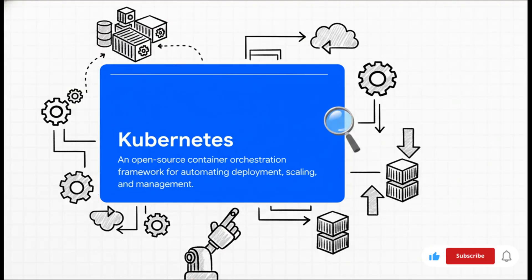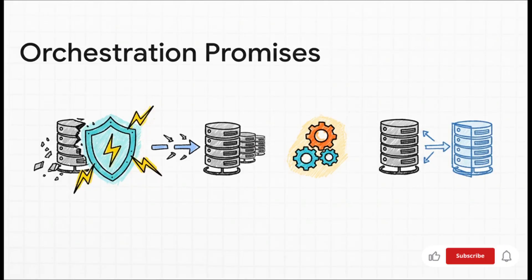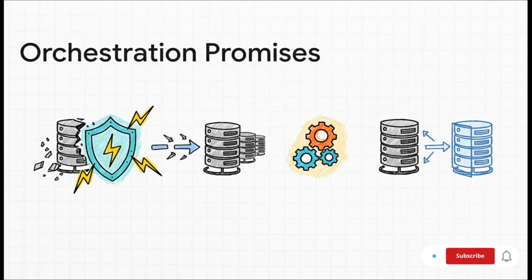The official definition is an open source container orchestration framework. Focus on that keyword: orchestration. It automates deploying your containers, scaling them up when traffic goes crazy, and managing their entire lifecycle — all without you lifting a finger for every little thing. And it makes three huge promises: first, high availability — your app stays up, period, no more 3am pager alerts; second, scalability — a sudden flood of users is no problem, Kubernetes adds more firepower automatically; and third, disaster recovery — when things break, it automatically detects it and heals itself.